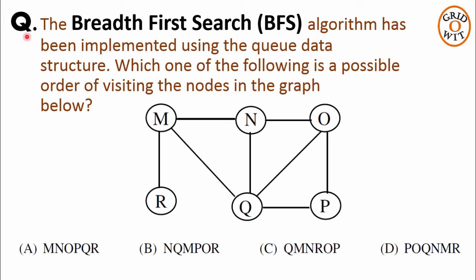Hello everyone, let us solve the next question on graph traversal. The breadth-first search BFS algorithm has been implemented using the queue data structure. Which one of the following is a possible order of visiting the nodes in the graph below? We are given 4 options and we will check each option one by one that which one is a possible BFS graph traversal sequence for the given graph.